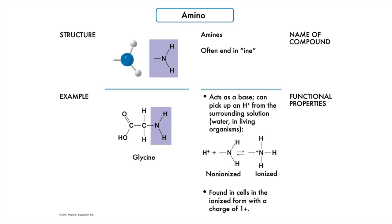Our first non-oxygen-containing functional group is the amino functional group. The amino group contains nitrogen, and molecules with this functional group often end in INE. While the carboxyl group functions as an acid, donating protons to solutions, amino groups function as bases, absorbing protons from solution. Like carboxyl functional groups, they can exist in both ionized and non-ionized states. It seems like carboxyl and amino groups might have a special relationship we should discuss — yes, they do, later. Though glycine here might give you a hint.